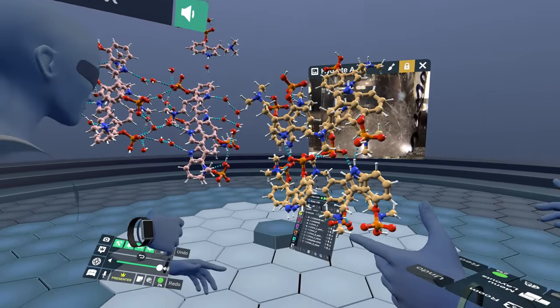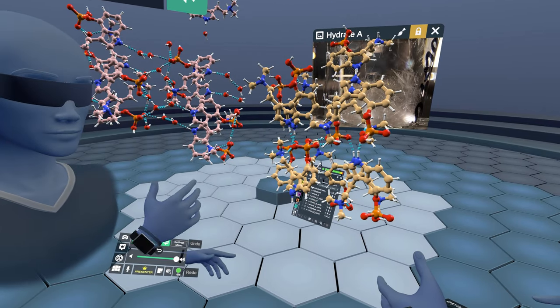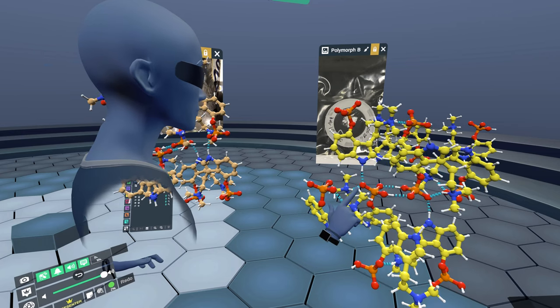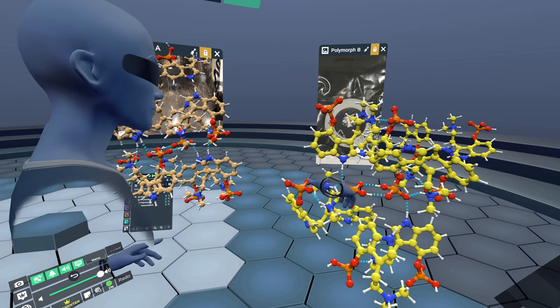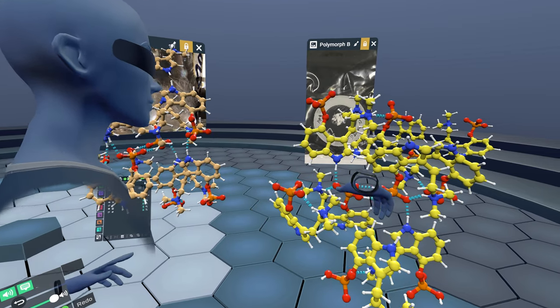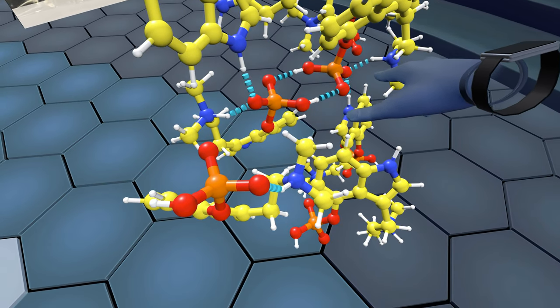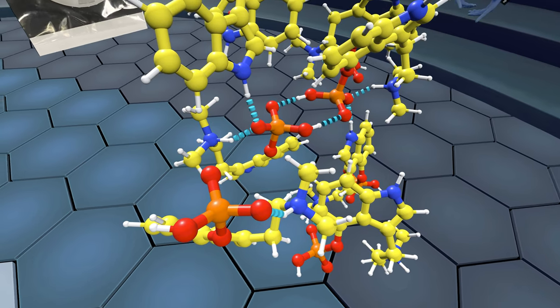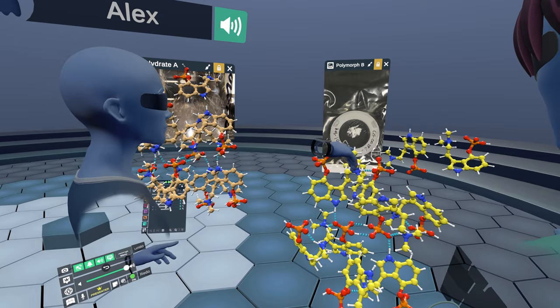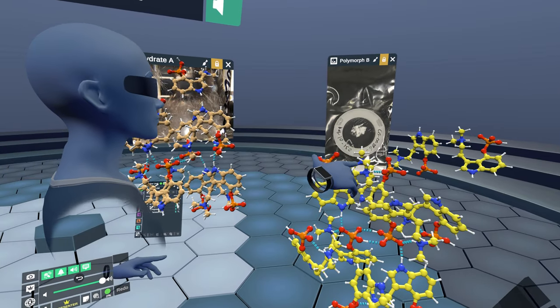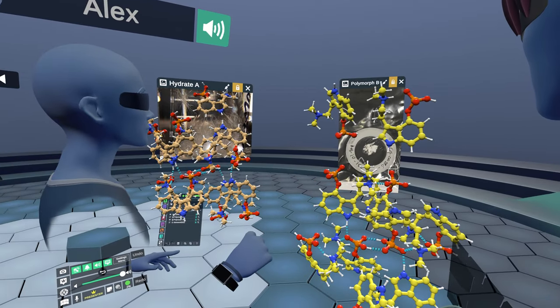And so then looking at polymorph B, which is here in yellow. And so as you can see in polymorph B, that same sort of six-membered ring motif is preserved. But there's one more unique feature in polymorph B that's not seen in polymorph A. And that is in the asymmetric unit here. So I've pulled out one asymmetric unit from polymorph B.